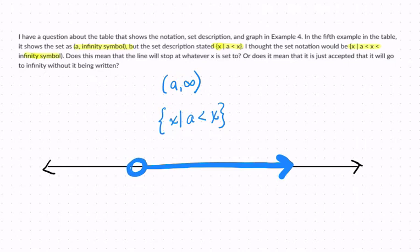And they're wondering, is that correct? So here is what they wrote. X such that X is bigger than A but less than infinity.